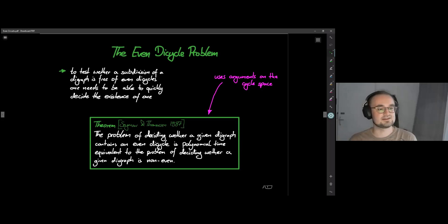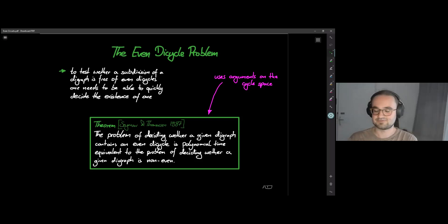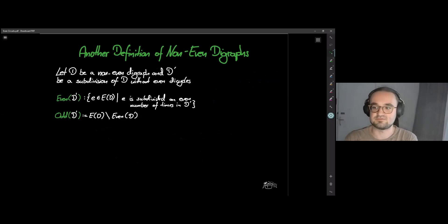Here's something we noticed when we went through the proof, namely that the one by Seymour and Thomassen uses almost exclusively arguments from the cycle space. This got us started because we thought: if it's just in the cycle space, then maybe we can do something more general. For those more familiar with matroids, this might already point towards what's coming next. To make this more comprehensible for the study of matroids, we need to get rid of the idea of subdivisions and reformulate what non-even digraph means.